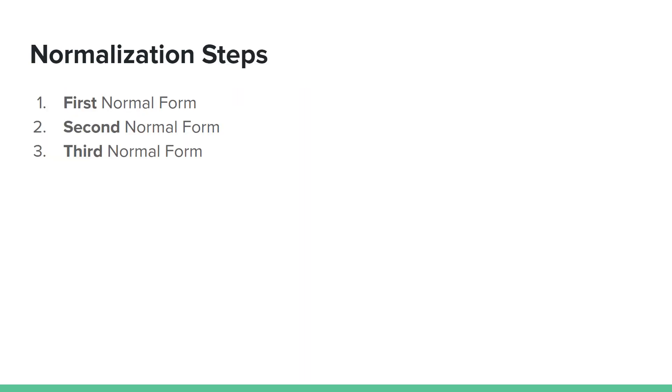Normalization is a process of organizing data in a database. We have the first normal form, second normal form, and third normal form.